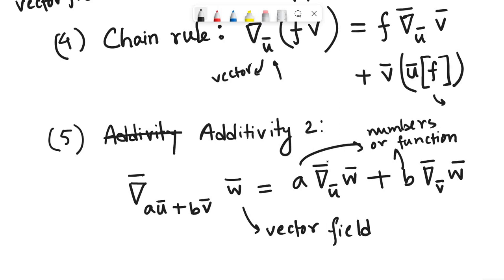So these are the basic properties of a covariant derivative. That means if this operator nabla with respect to a vector wants to be a covariant derivative — or at least a symmetric covariant derivative — then it will have to follow these five basic properties.